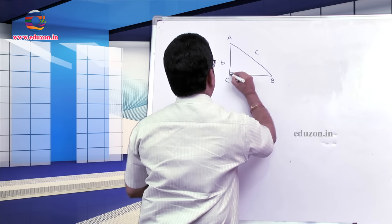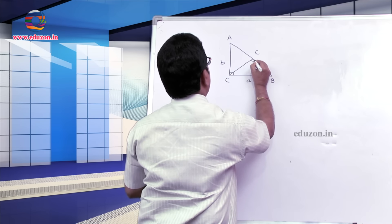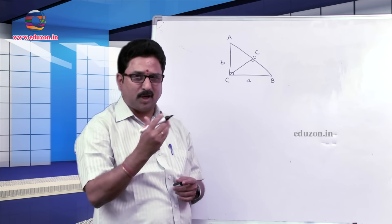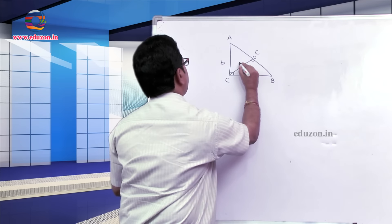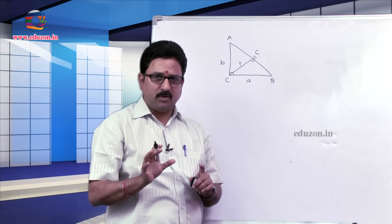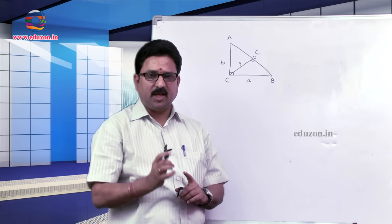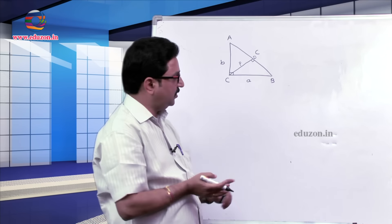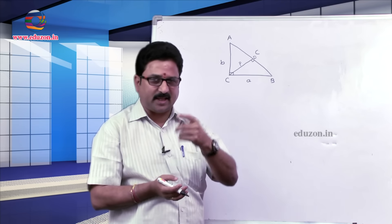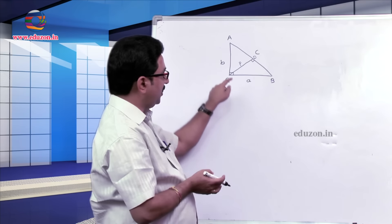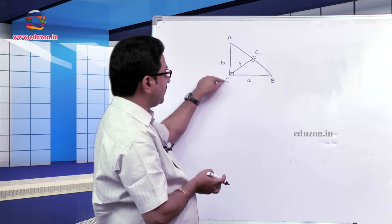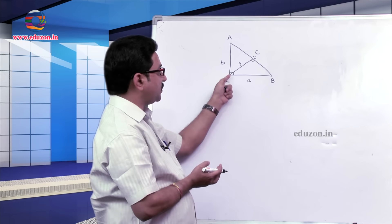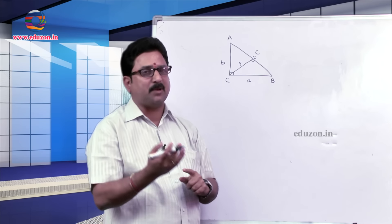Now a perpendicular is drawn from C to the hypotenuse, that is CD. CD is the perpendicular drawn from vertex C to the hypotenuse AB, and the length of this perpendicular is P. The entire information given is: ABC is a right angle triangle with angle C equal to 90 degrees and AB is the hypotenuse. Small a, small b, small c are the lengths of the sides BC, AC, and AB respectively, and there is a perpendicular drawn from vertex C to AB, that is CD, with length P.